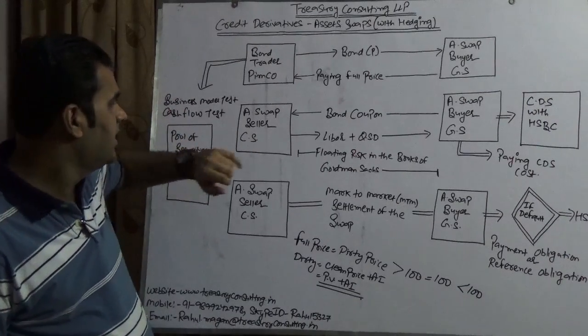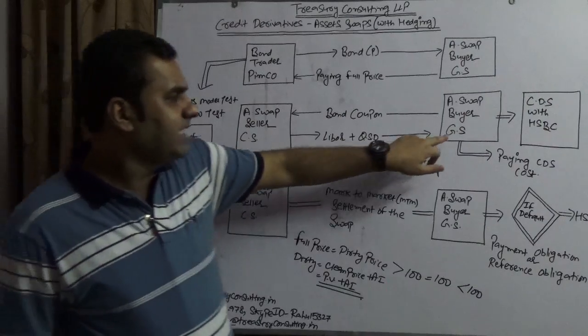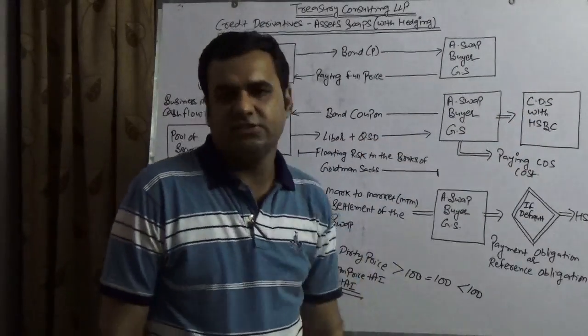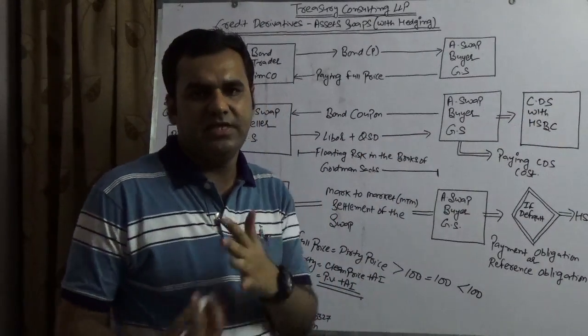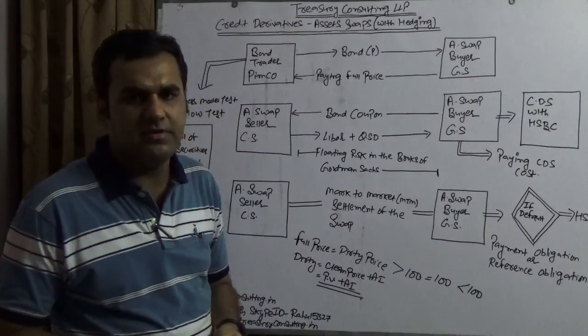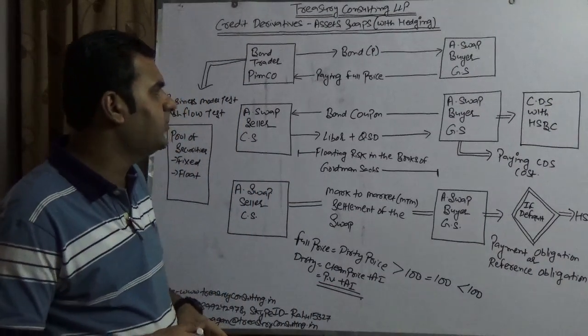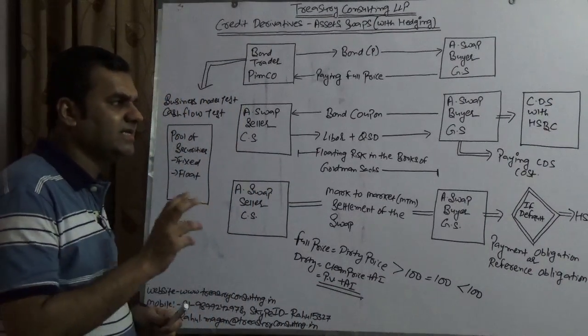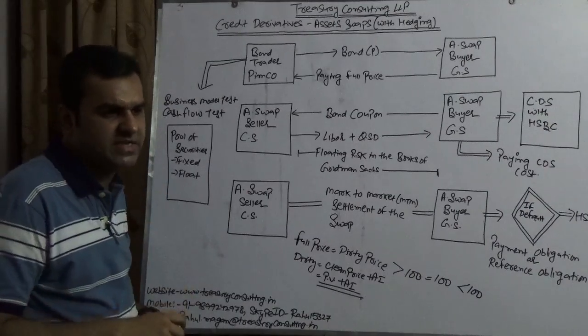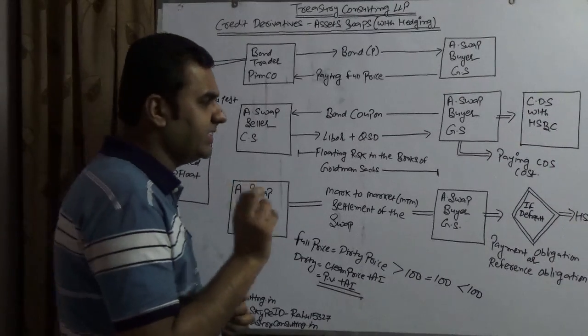Now Goldman Sachs is taking a CDS position with HSBC. It is an interbank CDS, and of course they are paying for that. Assuming this bond is 10 years and Goldman Sachs is taking a bullet CDS, they are taking a single trigger CDS.